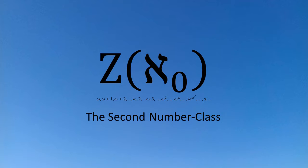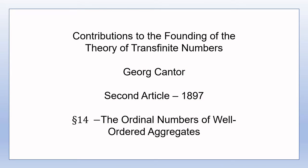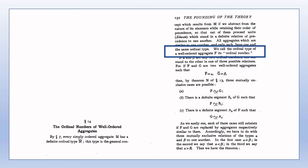Welcome to this video, the 14th video in my series on George Cantor's 1895 and 1897 articles on the theory of aggregates and transfinite numbers. Section 14 is titled 'The Ordinal Numbers of Well-ordered Aggregates.' This section starts off with the notion of ordinal number and will look at addition and multiplication of ordinal numbers and some of the basic properties of these operations.